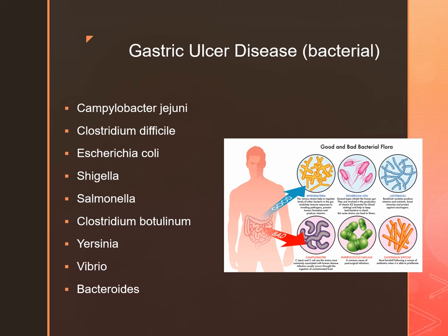Now we'll review some bacteria we've already discussed. H. pylori can lead to peptic ulcers; however, it's not really the H. pylori itself but the inflammation it causes that leads to the ulcers. H. pylori has the ability to neutralize gastric acidity and survives by infiltrating the mucous membrane, where the immune system cannot penetrate, causing inflammation that is believed to lead to peptic ulcers.